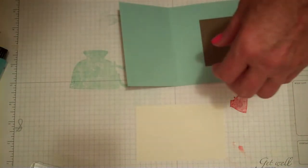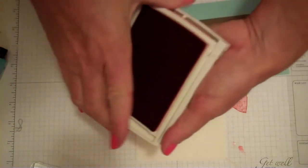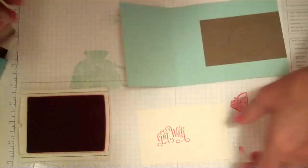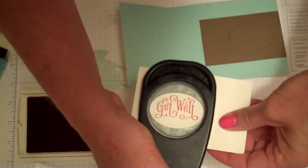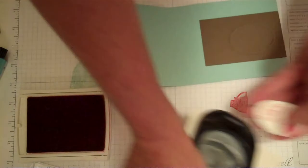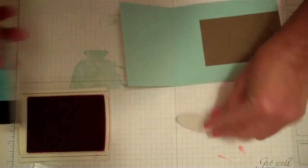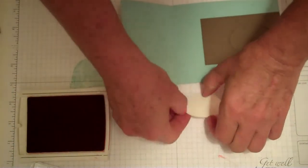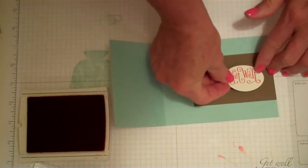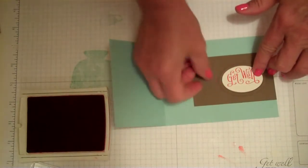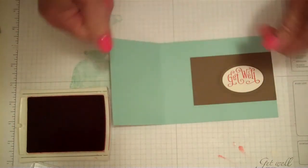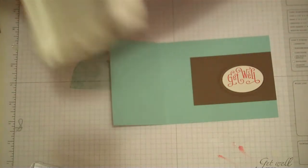Now for my get well, I'm going to use poppy parade. Take the punch, center it up, pop it out. A little bit of glue on the back. So neat the way Stampin' Up mixes things, the punch is coordinating with the embossing folders. It's really very unique, I like it.